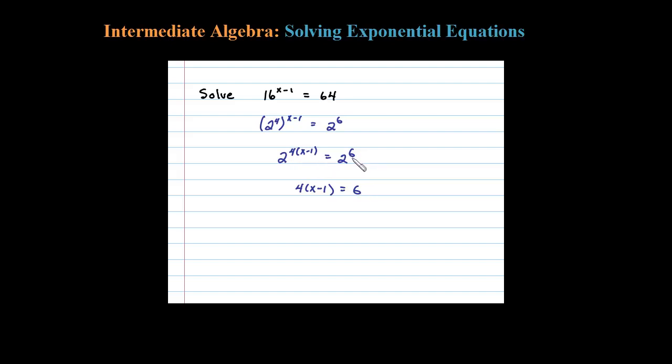What's left here is a simple linear equation we can solve. Adding 4 to both sides, I'll get 4x equals 10, or x equals 10 fourths. Simplifying, that's just 5 halves.